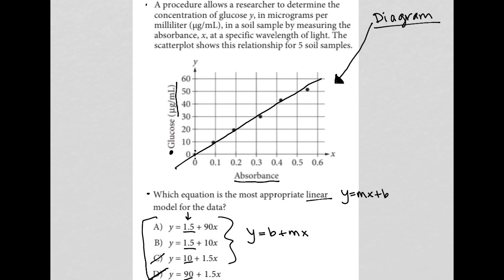So all we have left is choice A and B, so 90X and 10X. Now with that, I am going to use these equations. So let's use choice A. So Y equals 1.5X plus 90. Sorry, 1.5 plus 90X.